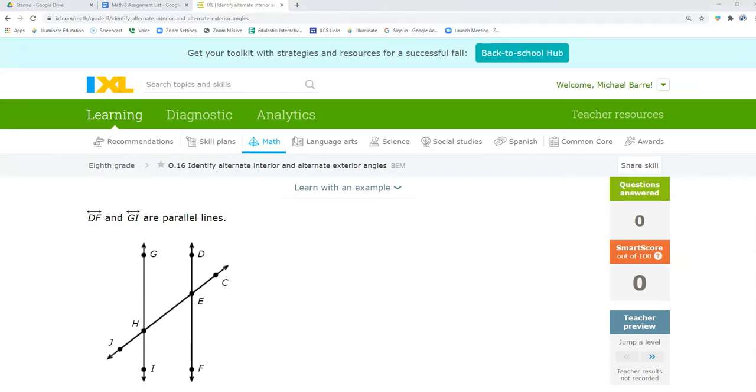Hey, it's Mr. Barr, and this is the IXL that goes with identifying alternate interior angles.